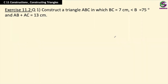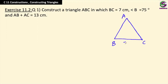Before we construct any given shape, the first work we have to do is just to try a rough shape. We have to construct a triangle ABC with BC as the base — that's the given measurement, 7 centimeters — angle B is 75 degrees, and AB plus AC together is 13 centimeters.